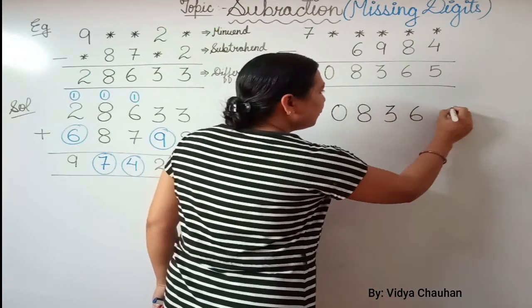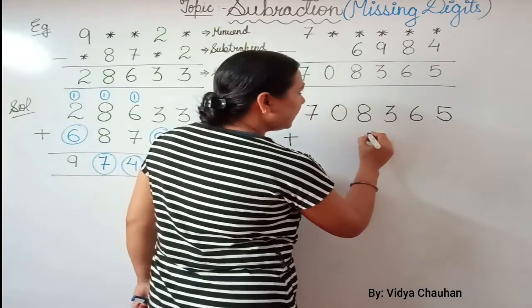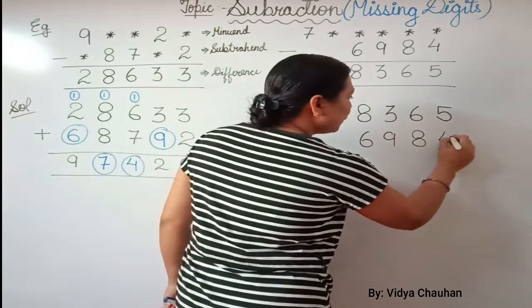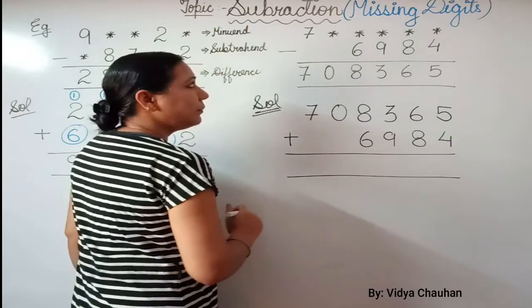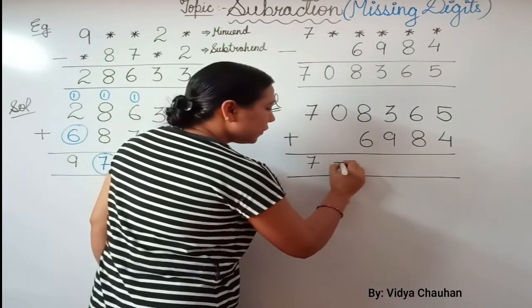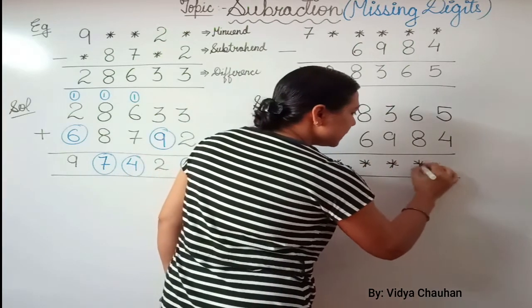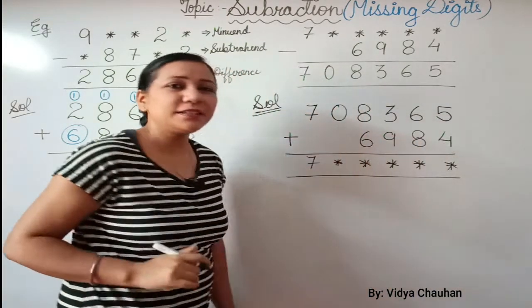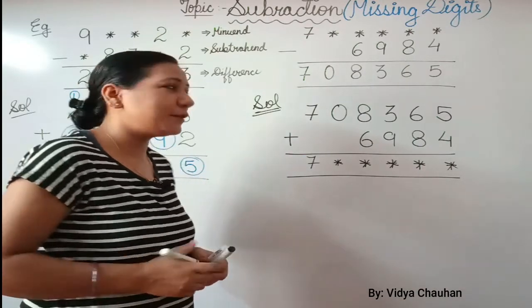The subtrahend is 6,984. The minuend starts with 7 and the rest of the digits are not known to us — they are the secret digits hidden behind the star symbols. Let us find what those secret digits are.